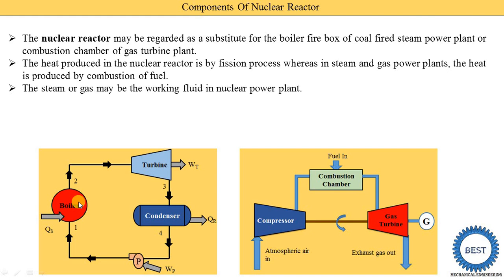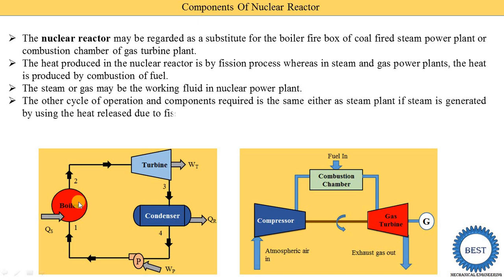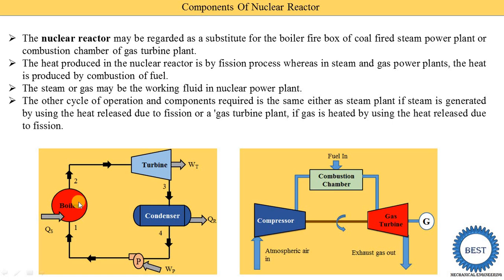Steam or gas may be the working fluid in a nuclear power plant depending on the type of plant. The other cycle of operations and components are the same as a steam plant if steam is generated — instead of a boiler we put the nuclear reactor, and steam is supplied to the turbine, condenser, and pump. If we use gas as the working fluid, the other components are the same as a gas turbine power plant: there is a compressor, the reactor replaces the combustion chamber, and the hot gas is supplied to the gas turbine then passed through a heat exchanger or exhausted directly.